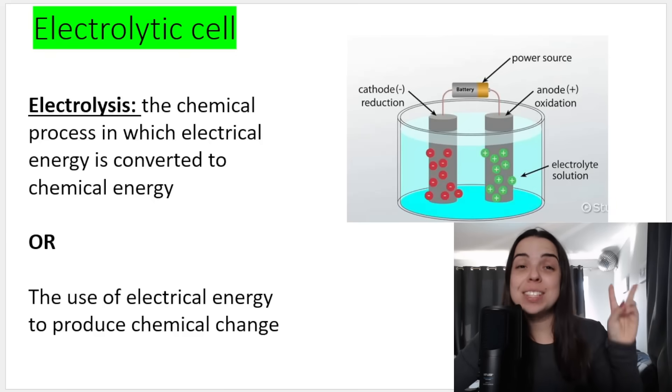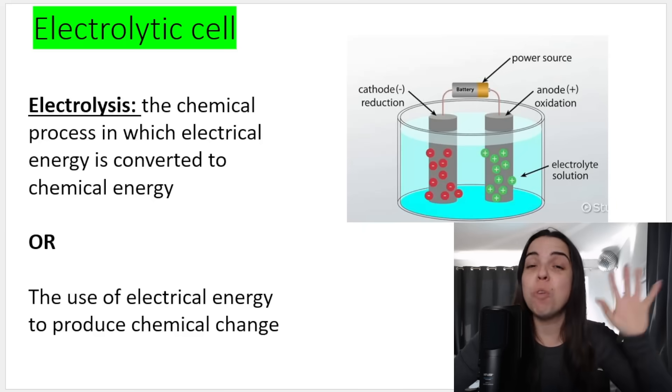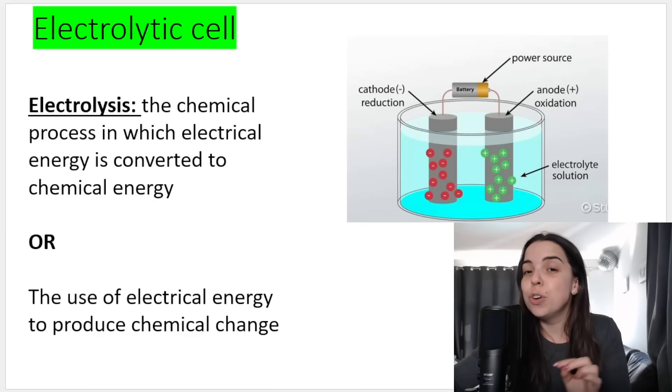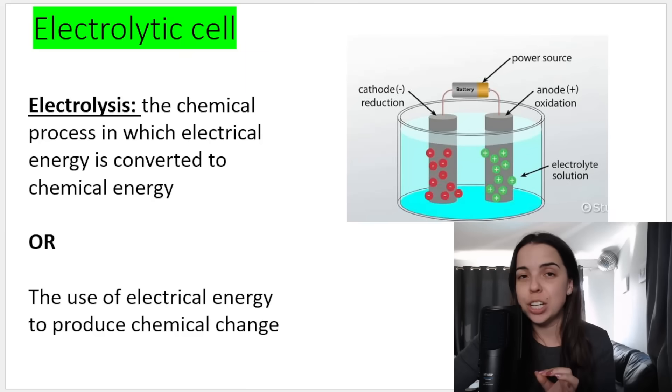The electrolytic cell is our second type of electrochemical cell that we will be speaking about. We spoke about galvanic cell or voltaic cells in previous videos in this playlist. So let's talk about electrolysis and the electrolytic cell. Electrolysis is the chemical process in which electrical energy is converted into chemical energy, or we are using electrical energy to produce chemical change.